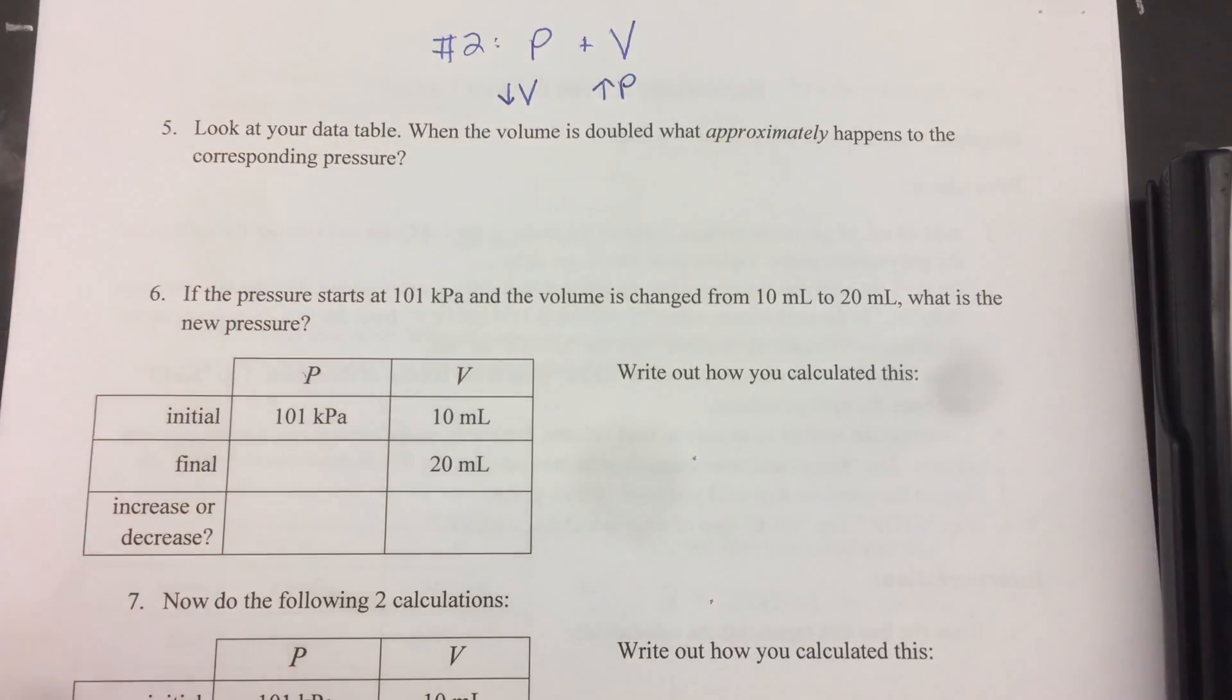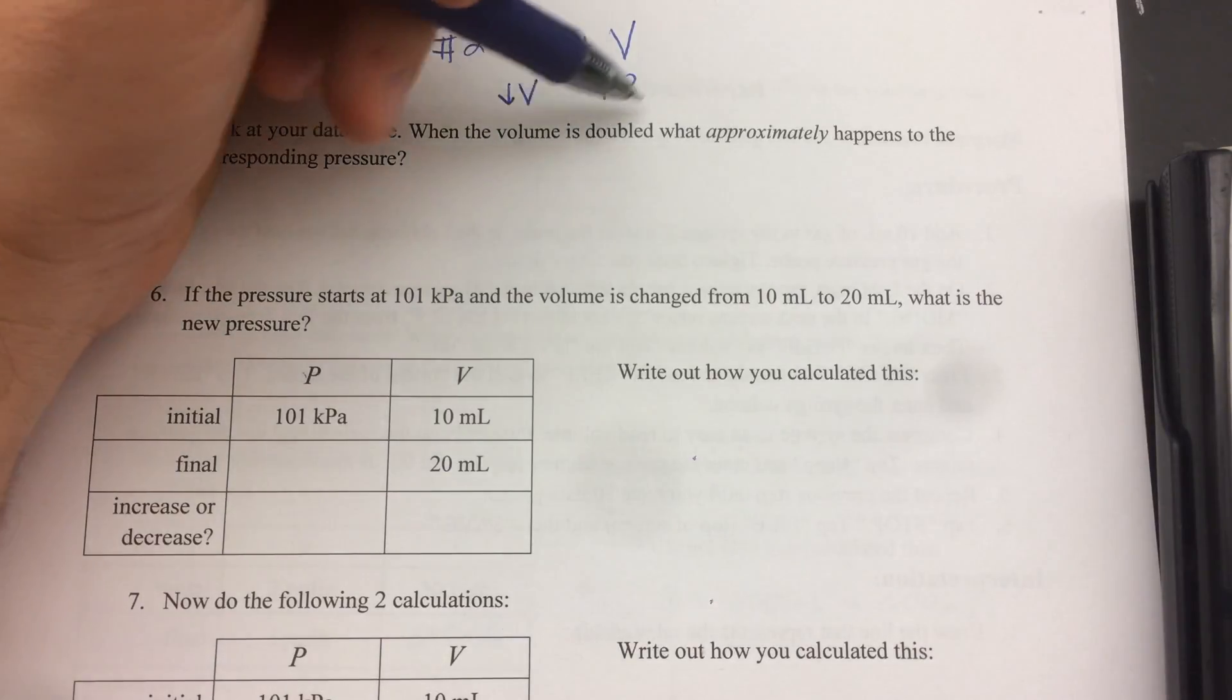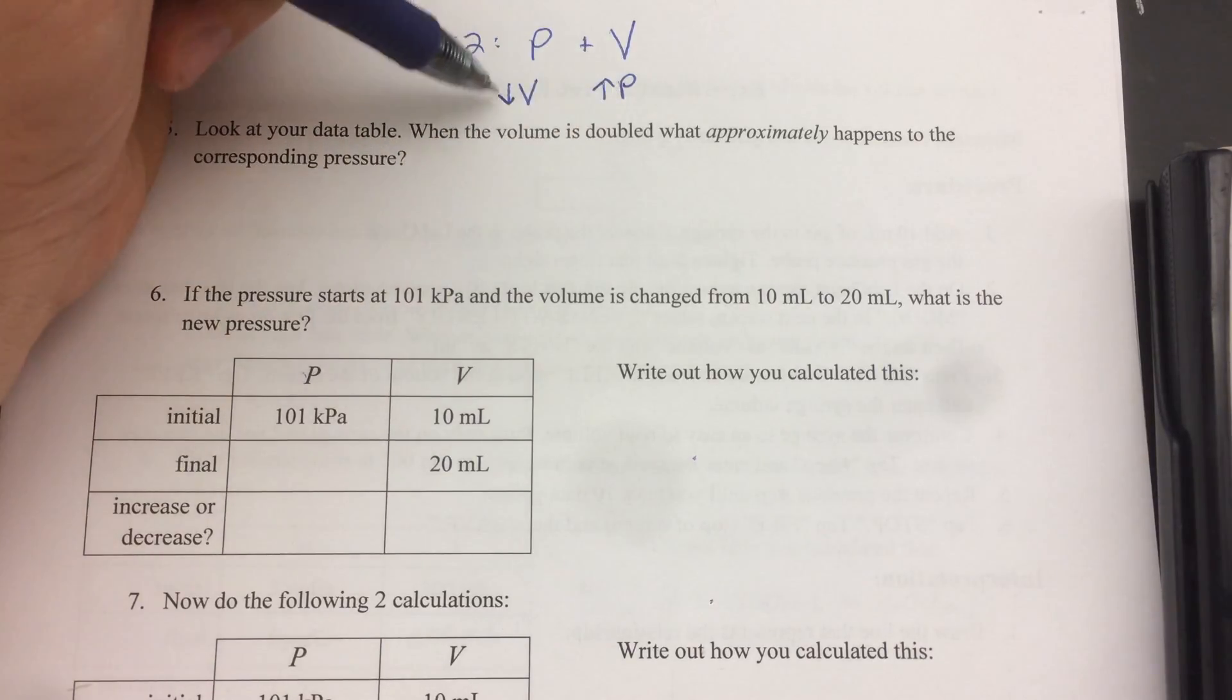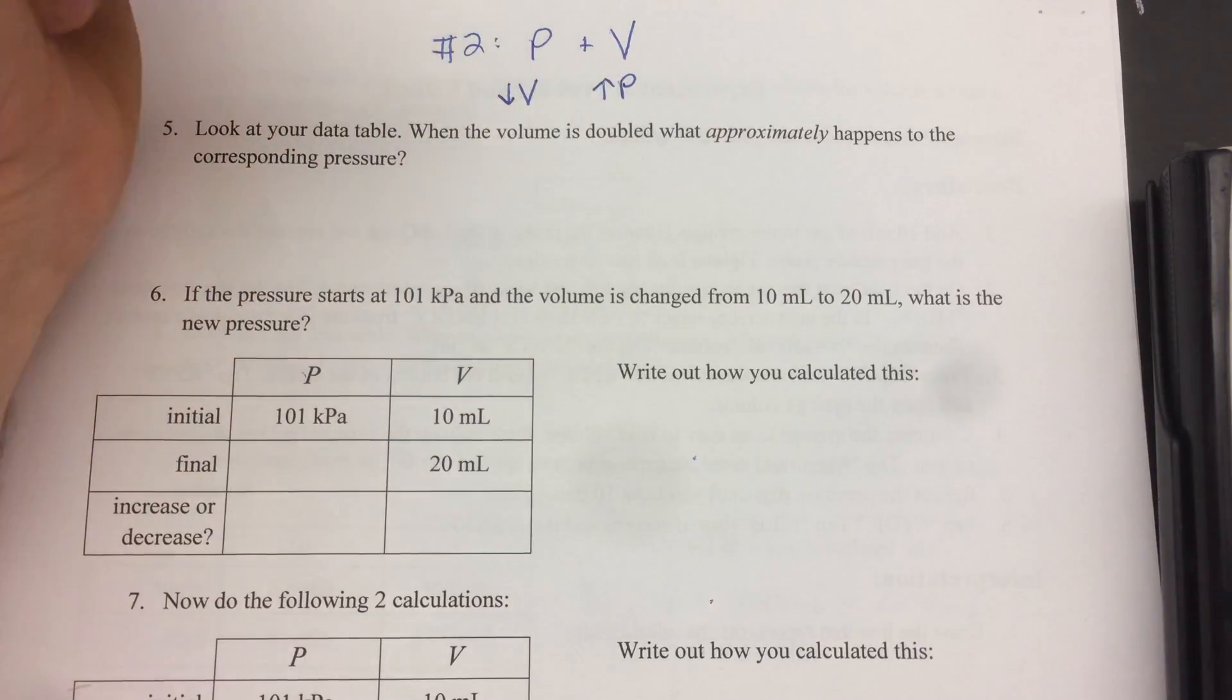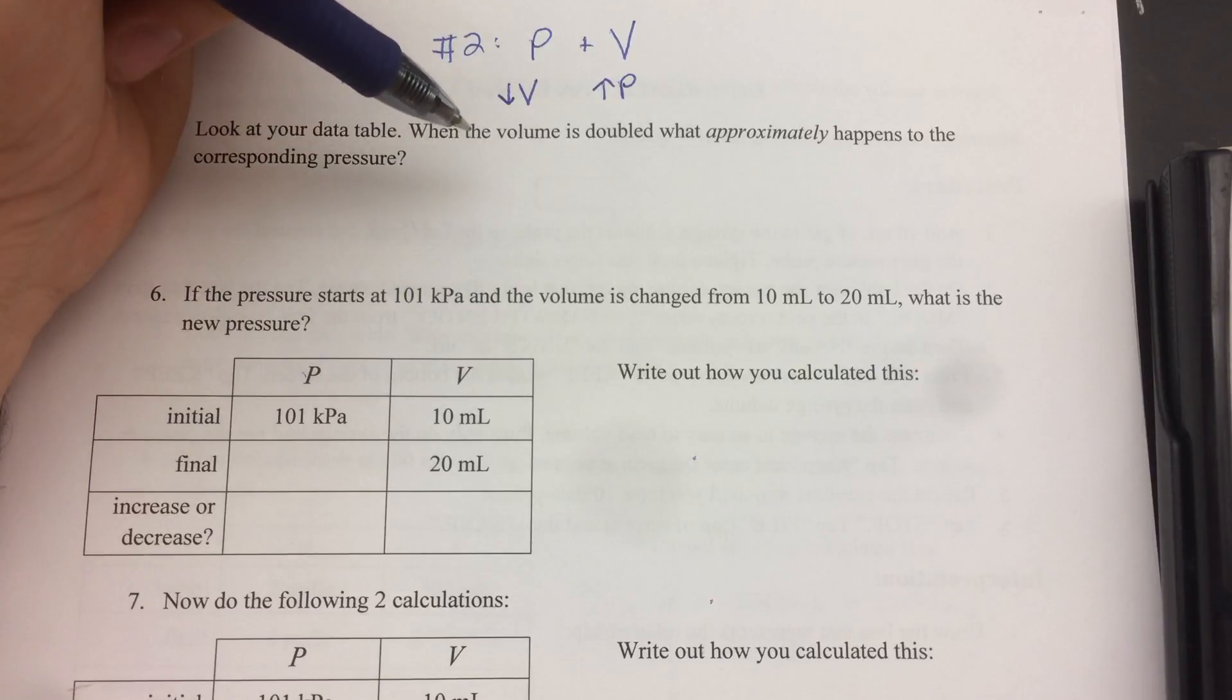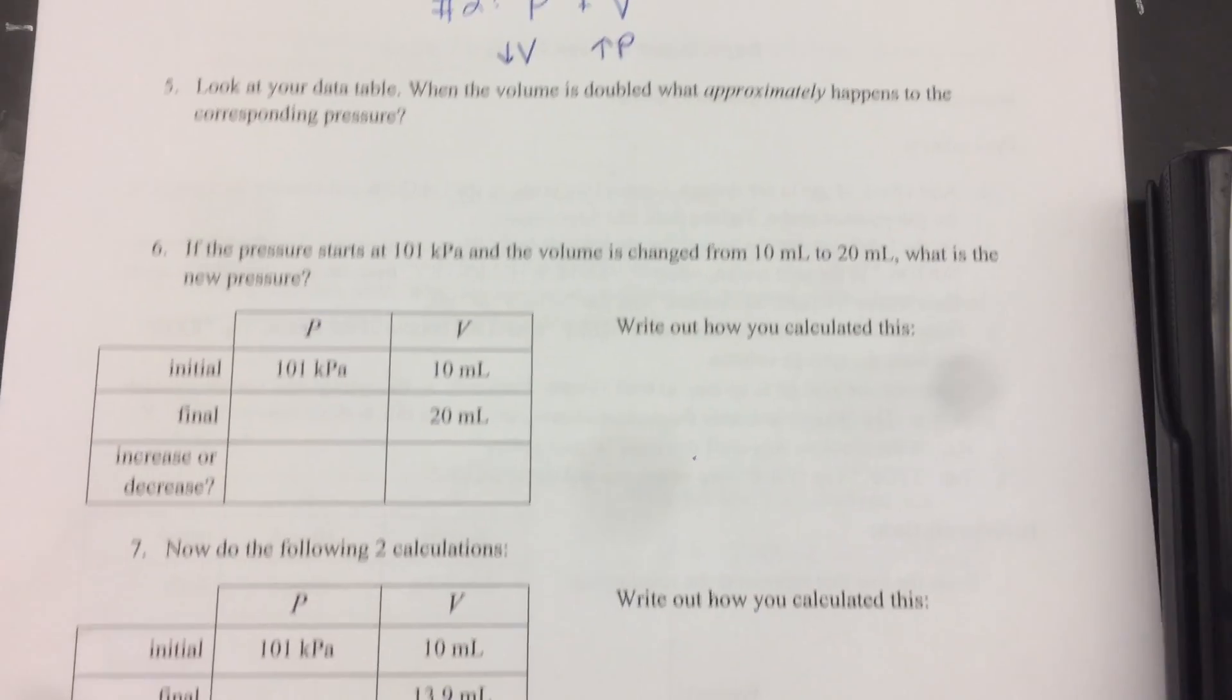So now the nature of this is if I cut the volume in half, I double the pressure. If I double the volume, I cut the pressure in half. So for this inverse relationship, you simply take that factor that we just calculated, only now we're going to put one over that factor. So that's what we're going to do here.